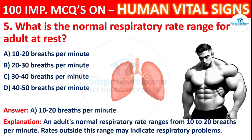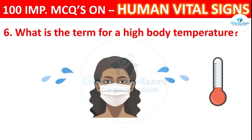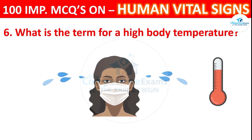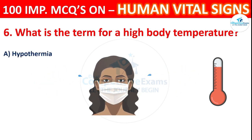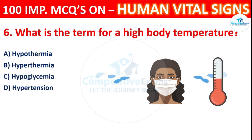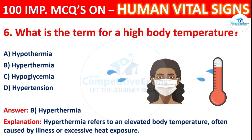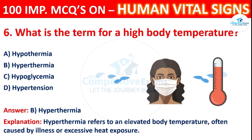Question 6: What is the term for a high body temperature? Options: hypothermia, hyperthermia, hypoglycemia, or hypertension. The correct answer is B, hyperthermia. Hyperthermia refers to an elevated body temperature, often caused by illness or excessive heat exposure.